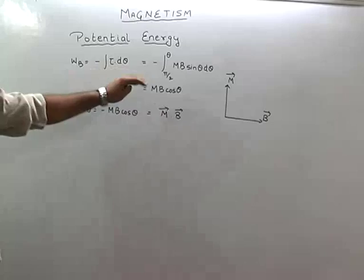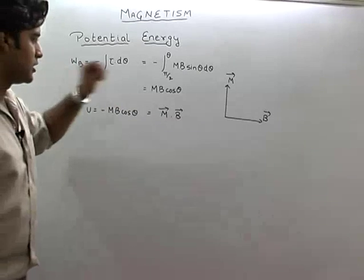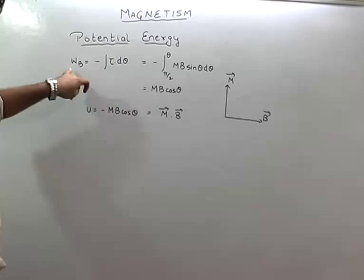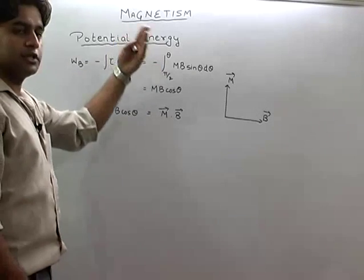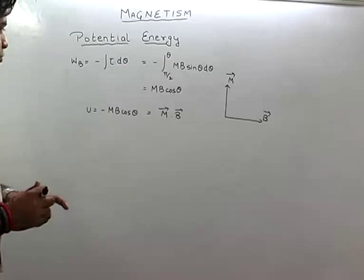Now let us see the work done by the magnetic field in rotating it by an angle theta. Because zero energy state is at pi by 2, the work done will be from pi by 2 to theta to rotate.